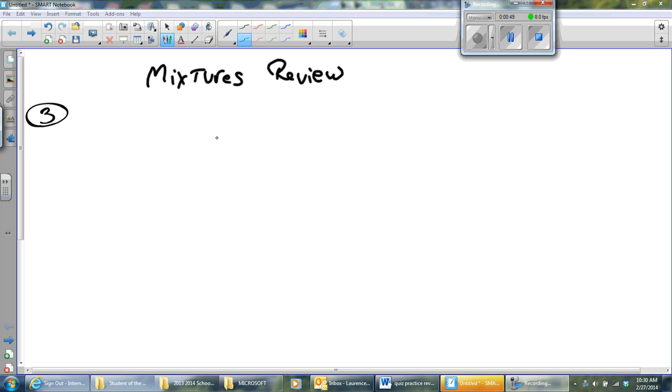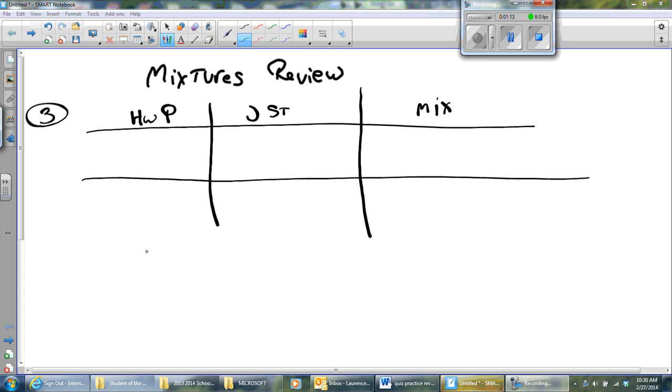Let's go to a chart on this one. I've got the Hawaiian pineapple, the Jamaican strawberries, and then the mixture. I need the kilograms, the price per kilogram, and then the cost.